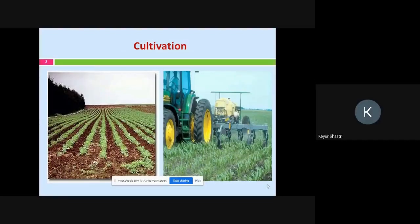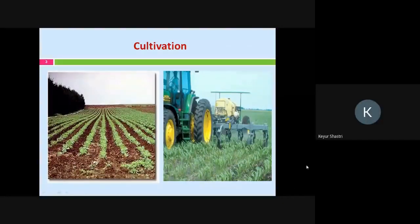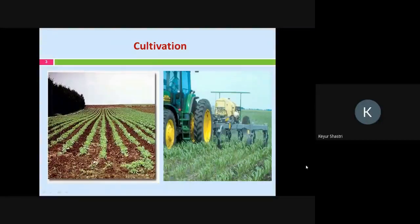This is what you actually see in the agricultural field, where there are different processes involved in carrying out the process of cultivation. There are so many different vehicles, instruments, or equipment which are being used for carrying out the process of cultivation.